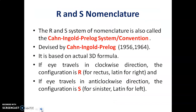The R&S system of nomenclature is also called the Cahn-Ingold-Prelog system or Cahn-Ingold-Prelog convention. It was devised by Cahn, Ingold, and Prelog in 1956, and it is based on actual three-dimensional formula.